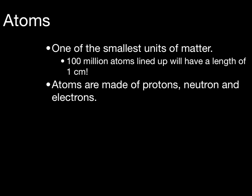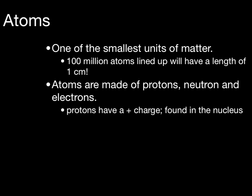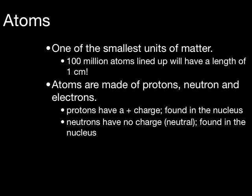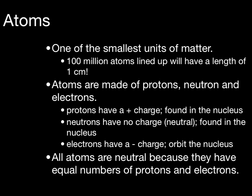Two of the three subatomic particles, as you may remember from physical science, have charges. Protons have a positive charge and are found in the nucleus of the atom. Neutrons have no charge, in other words they're neutral, and are also found in the nucleus of an atom. Electrons, on the other hand, orbit the nucleus of the atom and have a negative charge. Because atoms have equal numbers of protons and electrons, all atoms are neutral. The positive charge of the proton balances out the negative charge of the electrons.